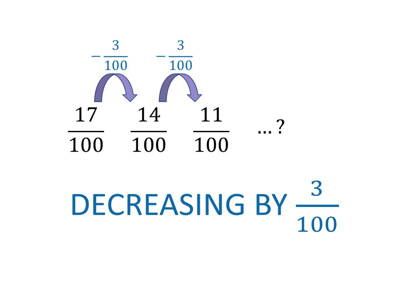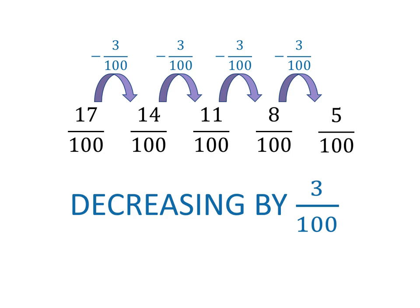Now we can continue the pattern. 11 over 100 minus 3 over 100 is 8 over 100, and 8 over 100 minus 3 over 100 is 5 over 100.